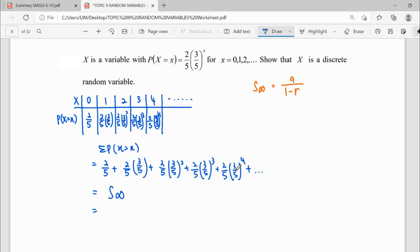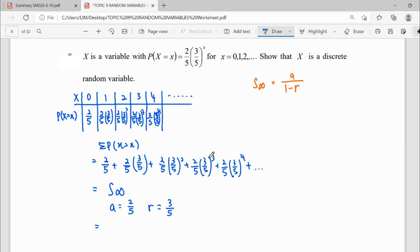From here we also can see what's the common ratio. You can see this number—second term, third term, fourth term, fifth term, sixth term—they multiply with 3 over 5. So from here we can read out: a is 2 over 5 and the common ratio is 3 over 5.